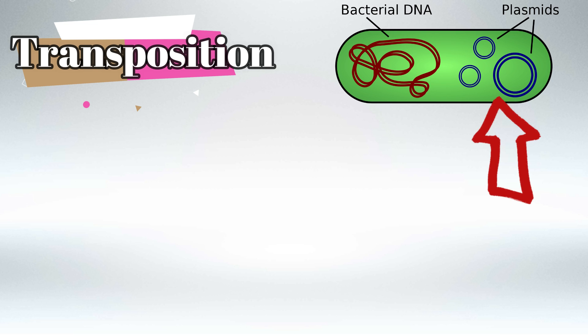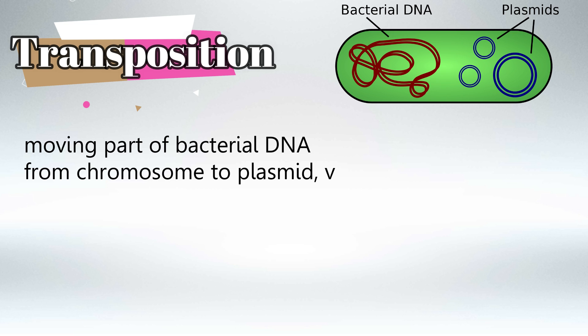And the bacterial plasmid is a small part of the bacterial DNA that has left the chromosome and now is floating inside the bacteria. So transposition refers to the process of extracting a small part of the bacterial chromosome to become plasmid or reintegrating the plasmid into the bacterial chromosome.